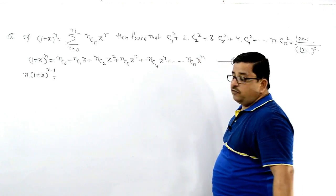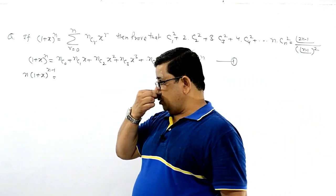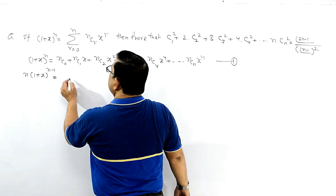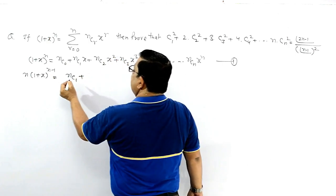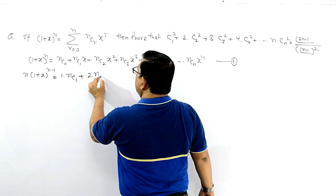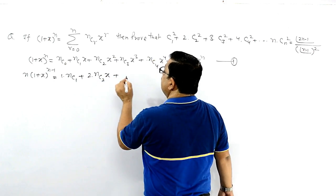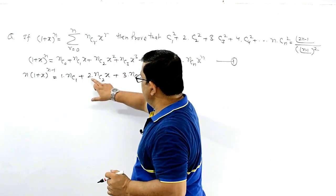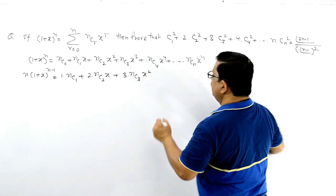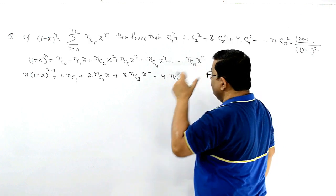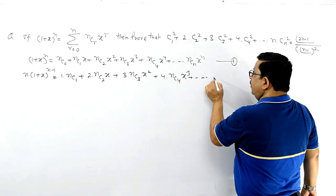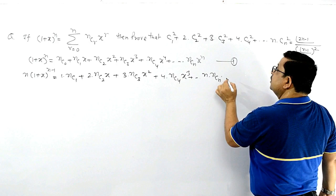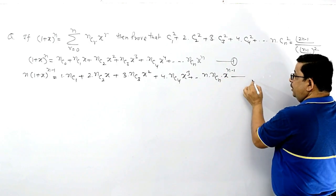Differentiating using the xⁿ formula — the constant gives zero — so the derivative gives: nc₁ + 2·nc₂·x + 3·nc₃·x² + 4·nc₄·x³ + ... + n·ncₙ·x^(n-1). Let's call this equation 2.